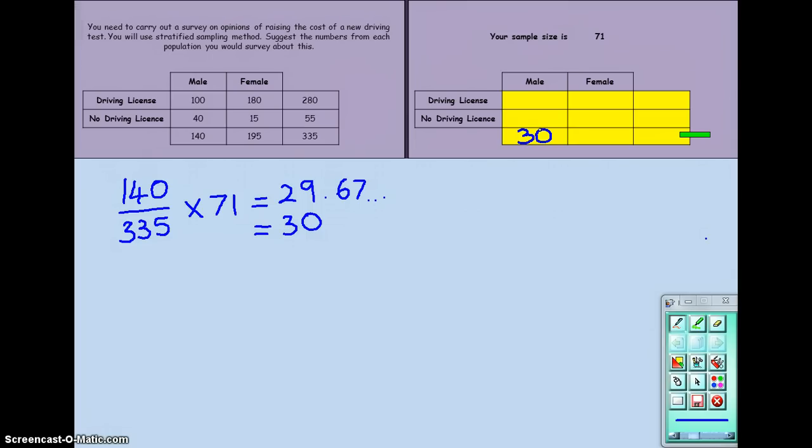Now, I know that my total population can only be 71. We're told that up here. So the number of females now can be calculated very easily. If I now just take 71, subtract 30, I can see that I need 41 females. That's the remaining number of my population left.